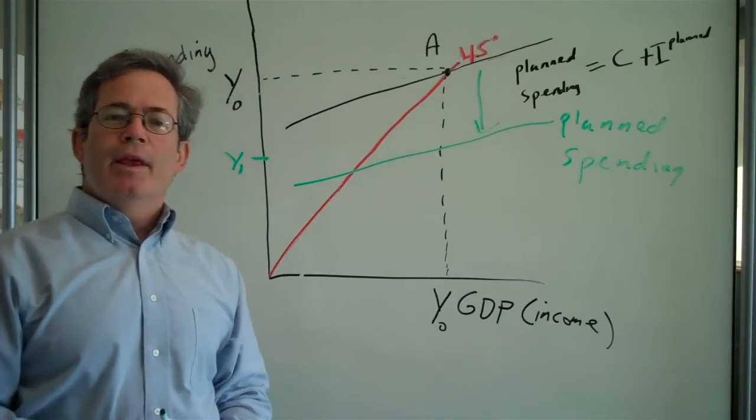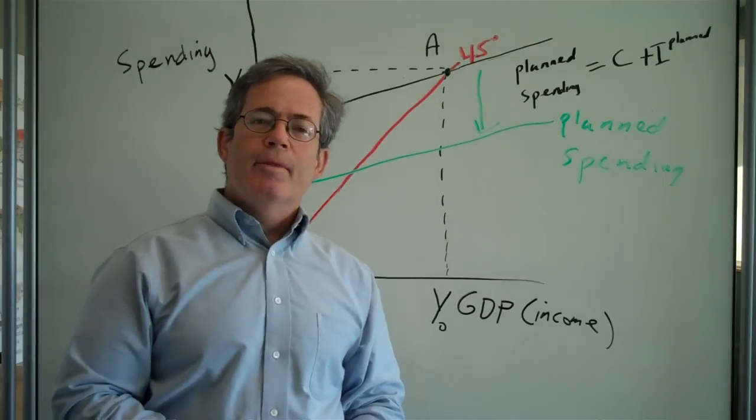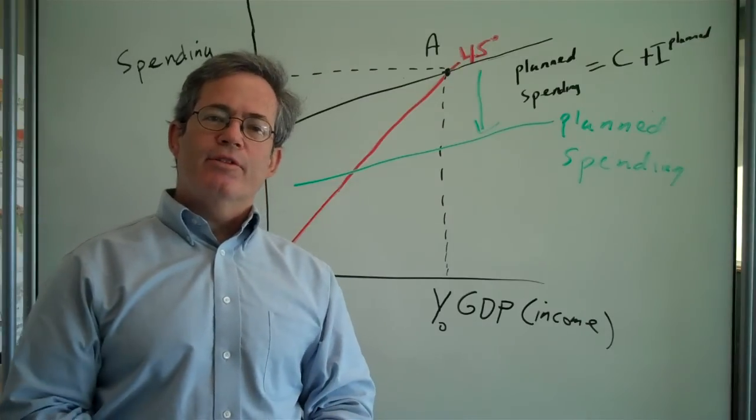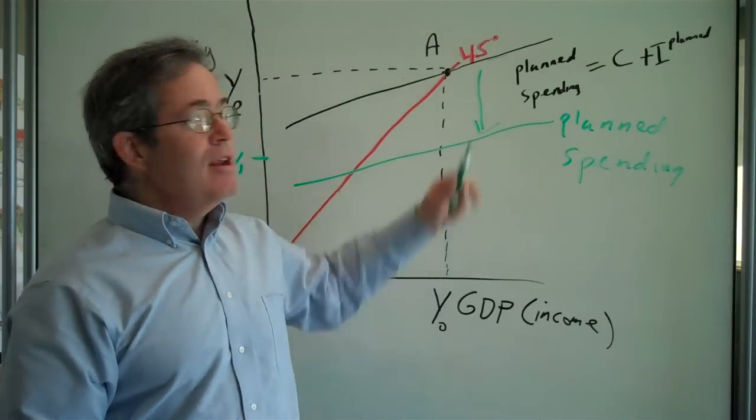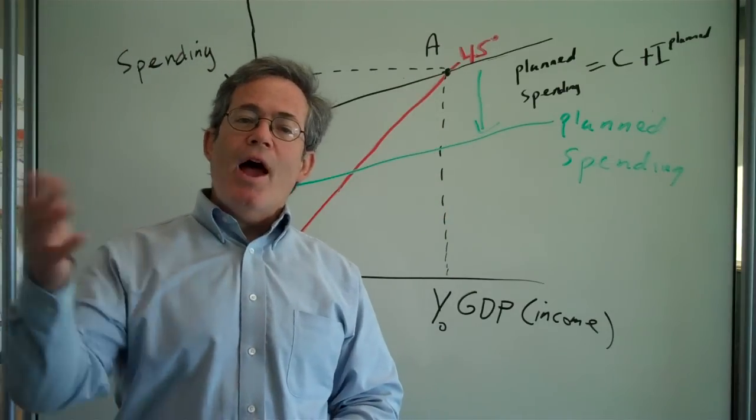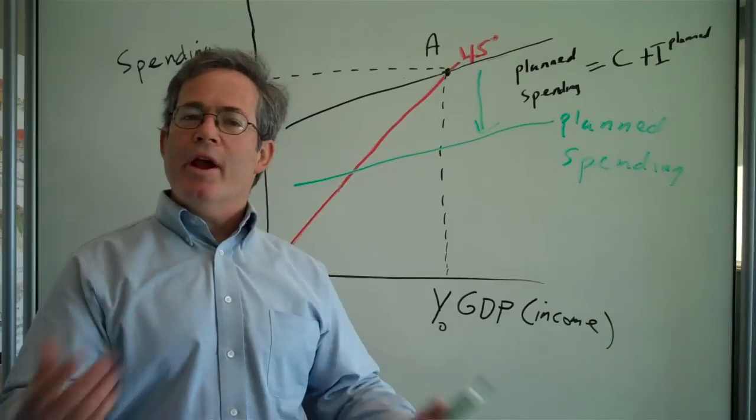But that's when things get really bad, because that's when the multiplier process starts to kick in. So let's say, because spending goes down, people get fired, they lose their jobs, their incomes go down.